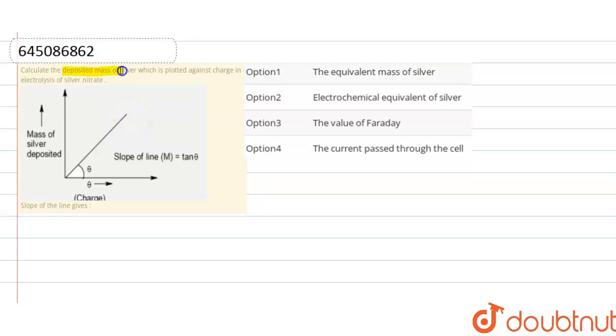the deposited mass of silver which is plotted against charge in electrolysis of silver nitrate. This is the given graph, and we have to find out the slope of the line. So here, first of all, according to Faraday's first